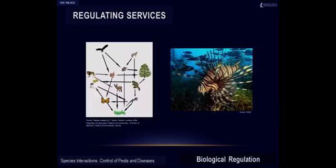Biological regulation is the interaction of species that affects the control of pests and diseases and the reduction of crop damage. A common disruption to this service is the introduction of invasive species that disrupt the balance of native species interactions. In the Gulf of Mexico, for example, lionfish have been disrupting the balance of native species interactions. As non-native species, lionfish have no predators and are known to eat large amounts of native crustaceans and fish. Lionfish have been found to reduce average net juvenile fish recruitment by 79%. Thus, it is important to maintain the provision of this service by controlling the introduction of invasive species.